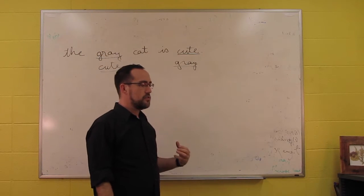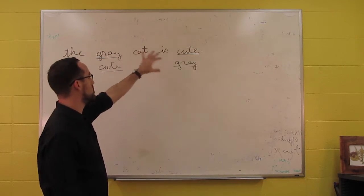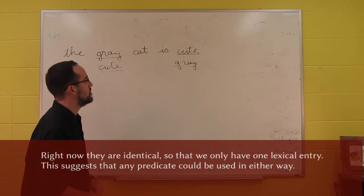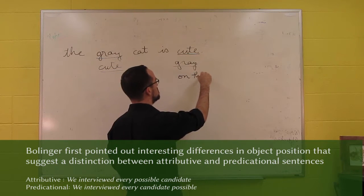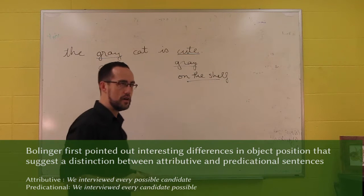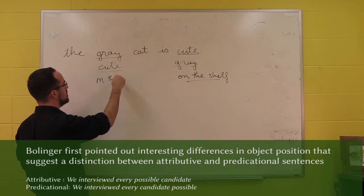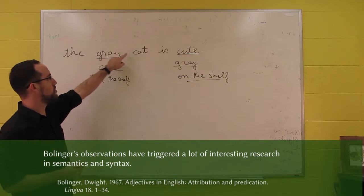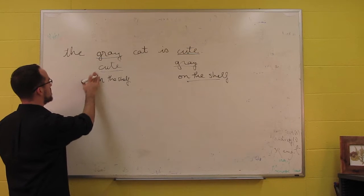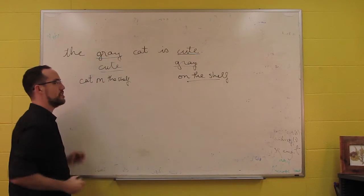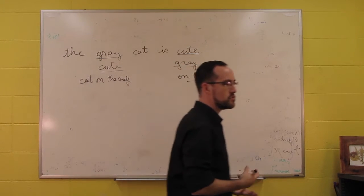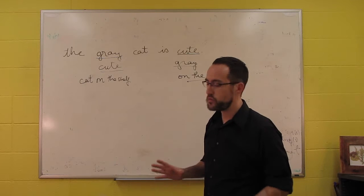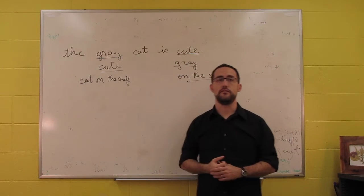Modifiers can differ syntactically over whether or not they can be used as one or the other, and sometimes those differences might be semantic as well. A good case of the syntactic type involves prepositional phrases. We can use prepositional phrases in English in a predicative way, but if we put them in an attributive way we have to be careful, because we can't put them before cat — we can only put them after. So we can't say the on-the-shelf cat is cute, but we can easily say the cat on the shelf is cute. This gives us syntactic differences in attributive senses, and a key question is whether we want different meanings for our modifiers based on whether they're predicative or attributive.